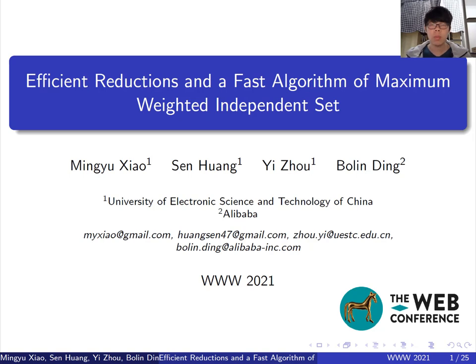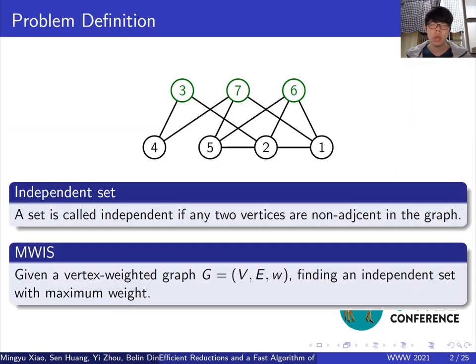It's one of the most fundamental problems in graph algorithms and has been widely studied in social networks. An independent set is a vertex set such that any two vertices are non-adjacent in the graph. As you see in this figure, the set of vertices colored by green is independent.